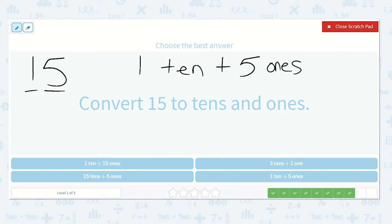They say one ten plus fifteen ones. Nope, there are not fifteen ones. There are five ones. So this is not it. Fifteen tens plus five ones. No way. Fifteen tens is too many.